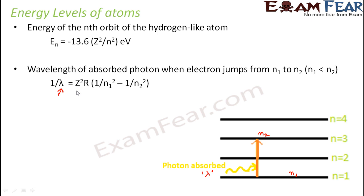Here Z is the atomic number and R is the Rydberg constant. This relation tells us the wavelength of the photon that needs to be absorbed so that the electron can jump from lower energy level n1 to higher energy level n2. Similarly, we can find the wavelength of the emitted photon when the electron jumps from n2 back to n1.